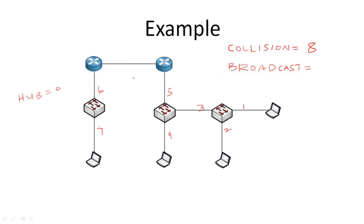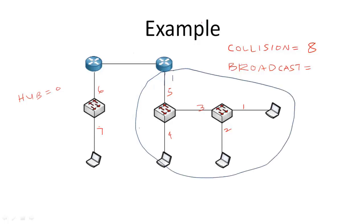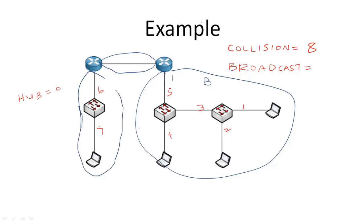Now how many broadcast domains do we have? We have two routers — we count the interfaces connected to the routers. The first interface gives us one broadcast domain covering everything on that side. The second interface gives us another broadcast domain, and the third gives us a third. Notice that it doesn't matter how many switches you have — you could have two switches or even a hundred switches in one broadcast domain. The broadcast domain is only segmented by a router, so we have three broadcast domains in total.